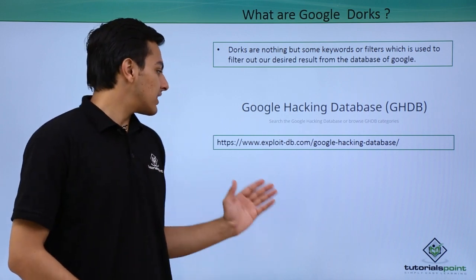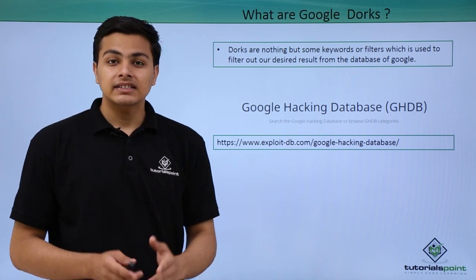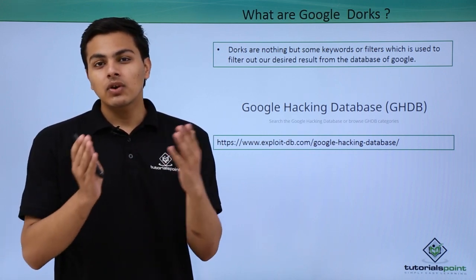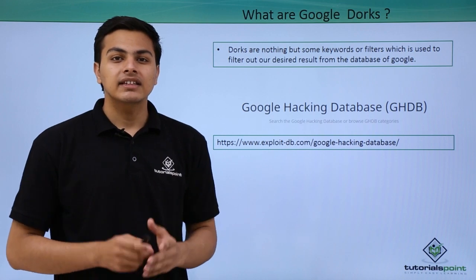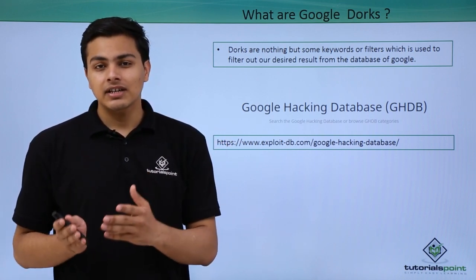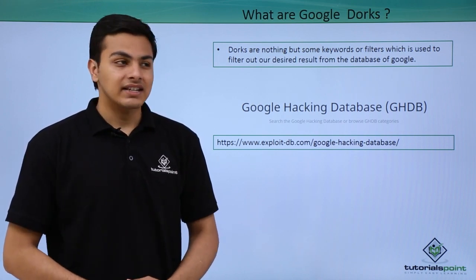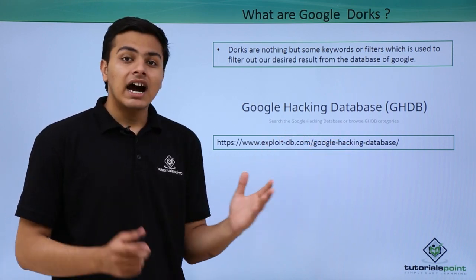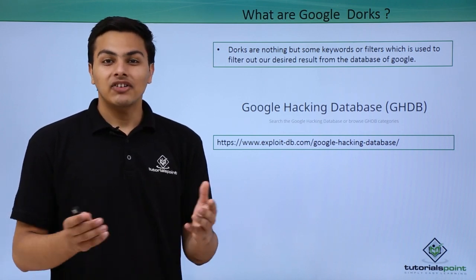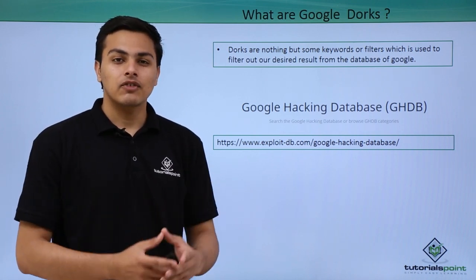There is a website called exploitdb.com which contains a database called the Google Hacking Database. In this Google Hacking Database there is a collection of Google Dorks which we can use to get interesting information from Google. All the Google Dorks present inside this database were found by various security researchers.